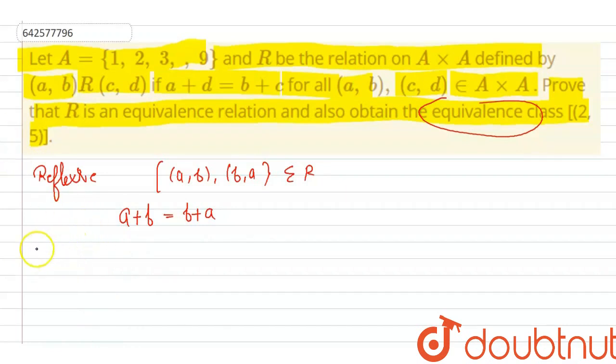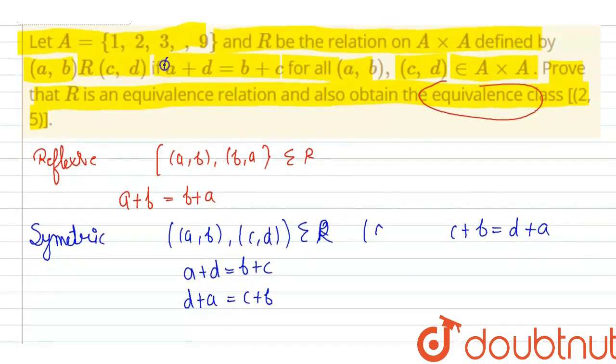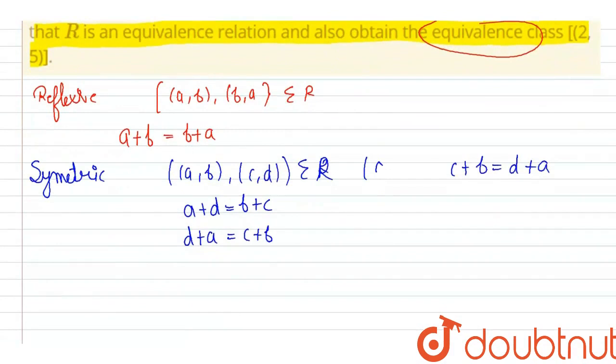To prove symmetry, let (a,b) and (c,d) belong to R. We are given that a+d = b+c. To prove symmetry, we must show that c+b = d+a. By interchanging positions, d+a = c+b. Since a+d = b+c is given, the relation is symmetric.